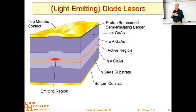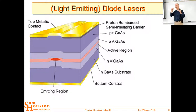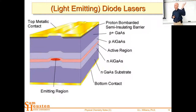We can tune the HOMO-LUMO gap using this doping. We can even drive protons into p-doped gallium arsenide to create crystal dislocations and further tune that HOMO-LUMO gap, selecting the wavelength of light we want. That's why our light-emitting diodes are so diverse - we can pick an enormous range of wavelengths to come out of those diodes.